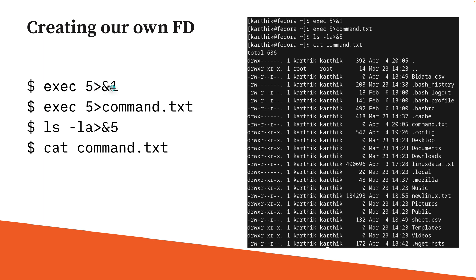Then we do an exec of 5 with a greater-than symbol to redirect it to a command.txt file. Once we do that, file descriptor 5 itself is redirected to command.txt. Then if we do a directory listing and redirect it to ampersand 5, explicitly using file descriptor 5, and then do a cat of command.txt, it will print all the different files we have. So it's going to be very interesting.